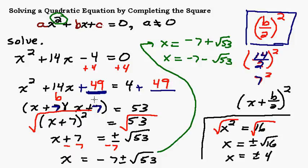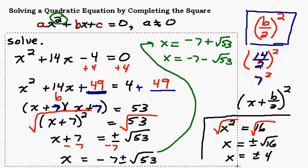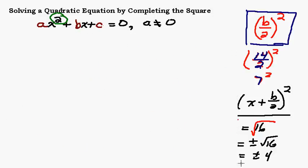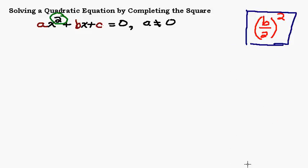We just got finished completing the square — doing a little introduction to completing the square and going through an example. Let's go ahead and look at another example, so I'm going to erase most of this stuff here. We'll leave our formula information. I'll go through another example, and then maybe you can try one and see how you do.